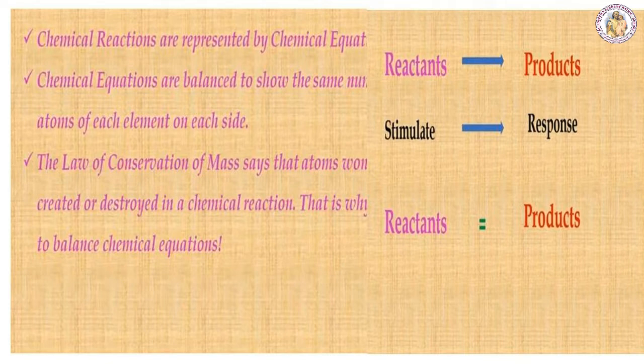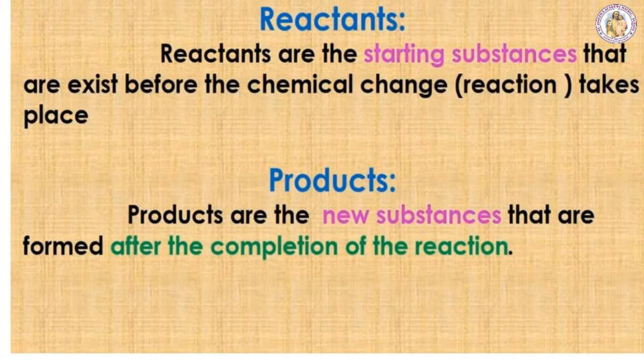The left-hand side should always be equal to the right-hand side — or more correctly, the reactant should be equal to the product. Reactants are the starting substances that exist before the chemical reaction takes place — they are on the left-hand side. Products are the new substances formed after the completion of the reaction — that is called the product.